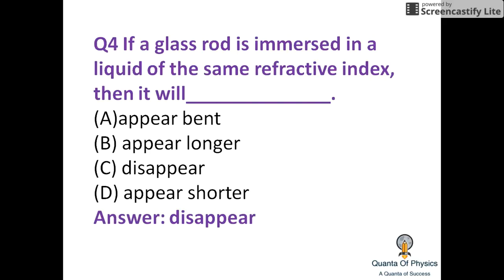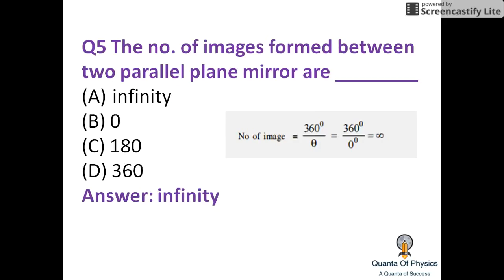This is an important question. The number of images formed between two parallel plane mirrors is infinity. The number of images is equal to 360 divided by the angle between the two mirrors.